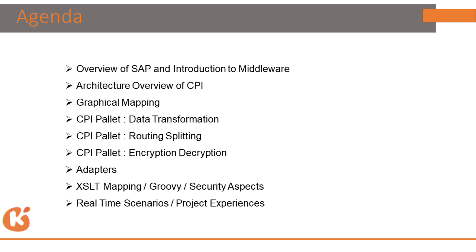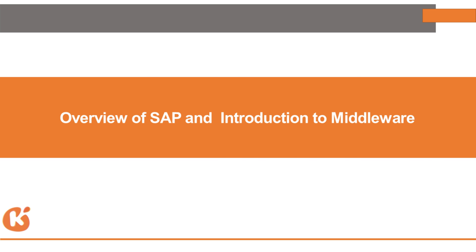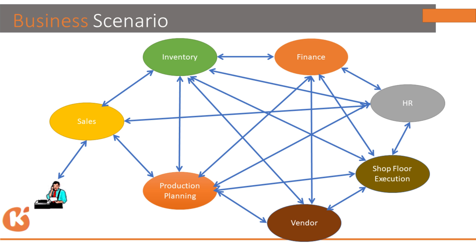Nowadays CPI is more popular than PI/PO. PI is an on-premise system, but CPI is more flexible and makes your business more efficient. Through CPI you can manage your warehouse, human resources, and finance — it provides an end-to-end solution.